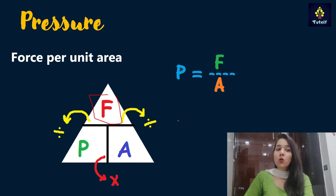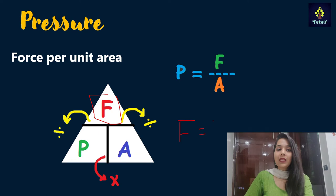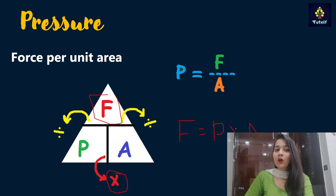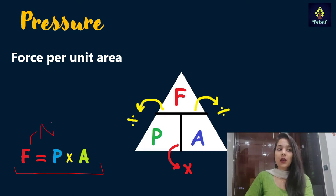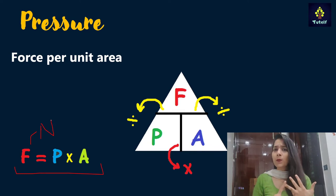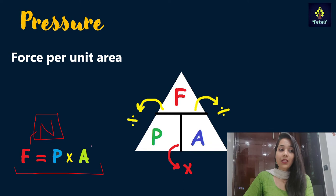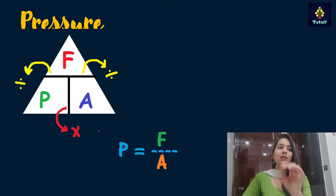For force, I write F equals, and the two remaining terms are P and A. The line between P and A is that of multiplication, so force equals P times A. The unit of force is newton — whether it's magnetic, electromagnetic, or gravitational force, the unit is always newton. The standard unit of area is meter square.